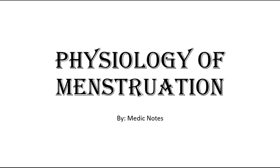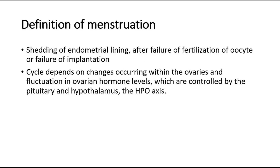Welcome back to another video of Medic Notes. This video will be on the physiology of menstruation. Menstruation is defined as the shedding of the endometrial lining after failure of fertilization of an oocyte or failure of implantation.